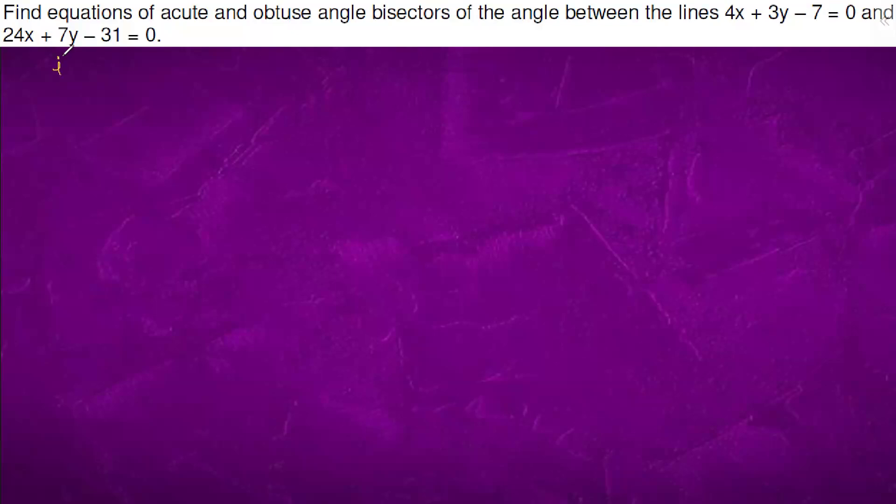In this question, find the equation of acute and obtuse angle bisector. So what will happen, there will be two lines. Can we say that there is a point which lies on this angle bisector which will be having equal distance from both the lines.